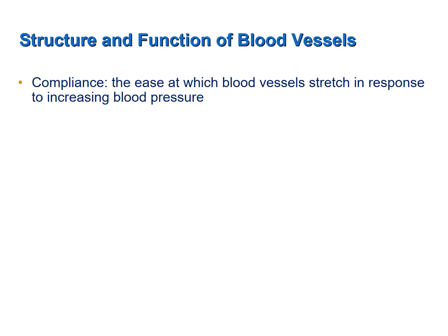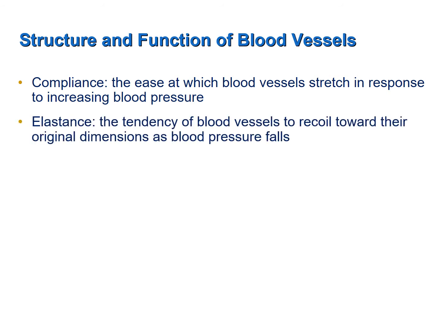Now let's talk about two properties of blood vessels which are important to understand. One is the property of compliance — the ease at which blood vessels stretch in response to an increase in blood pressure. Elastance is the tendency of a blood vessel to recoil towards its original dimensions as blood pressure falls. To demonstrate these properties using the same example as the textbook: when you put a new pair of socks on, they fit nice and snugly, and when you take them off, they return to their original shape and size. This is because they are low in compliance and high in elastance.